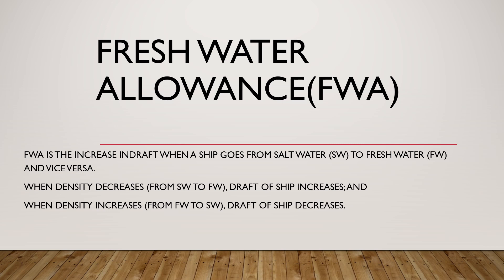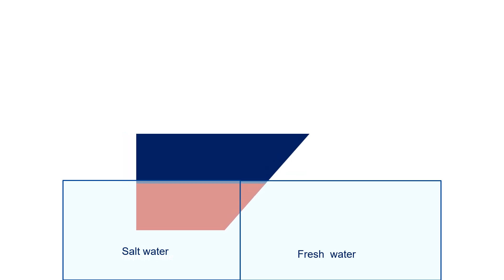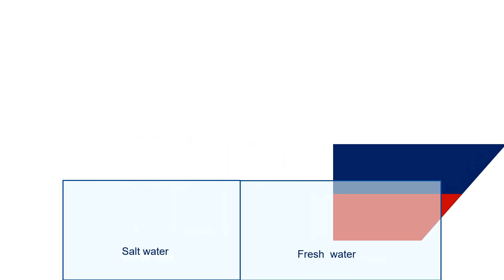Let me show you by animations. When the ship goes from salt water to fresh water, the density of the water in which the ship is floating decreases from 1.025 to 1. Because the density is decreasing, the draft of the ship will increase — that means the ship will sink as it goes from salt water to fresh water. This amount of sinkage is known as the freshwater allowance. The same happens when a ship goes from fresh water to salt water — the ship will rise, or the draft will decrease, by the same amount as the freshwater allowance.